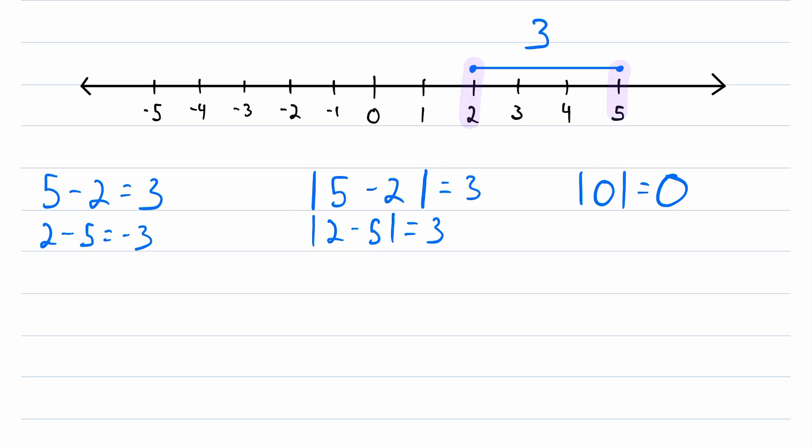So to find the distance between two numbers, all we have to do is subtract them. And it doesn't matter what order we subtract them in, and take the absolute value of that subtraction. So to find the distance between 2 and 5, we take the absolute value of 5 minus 2, or the absolute value of 2 minus 5, which is 3.